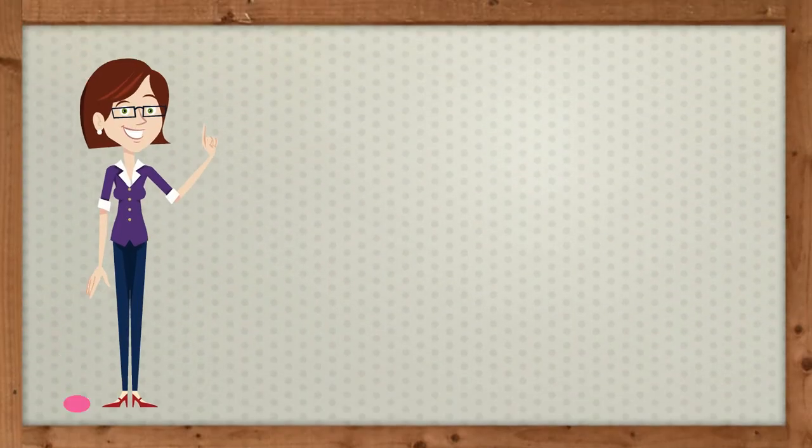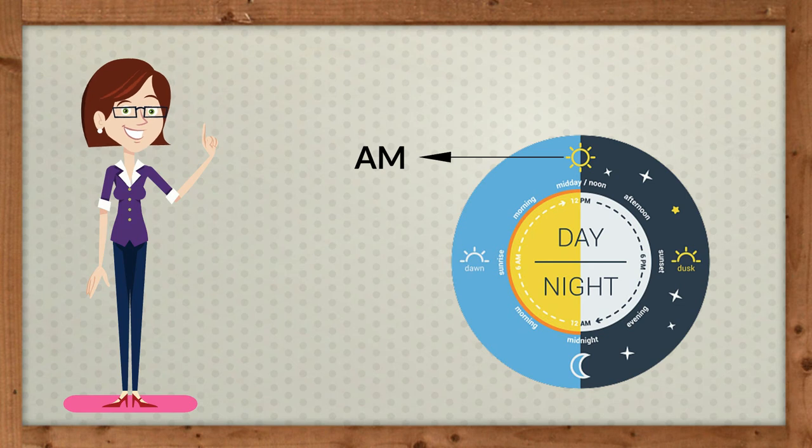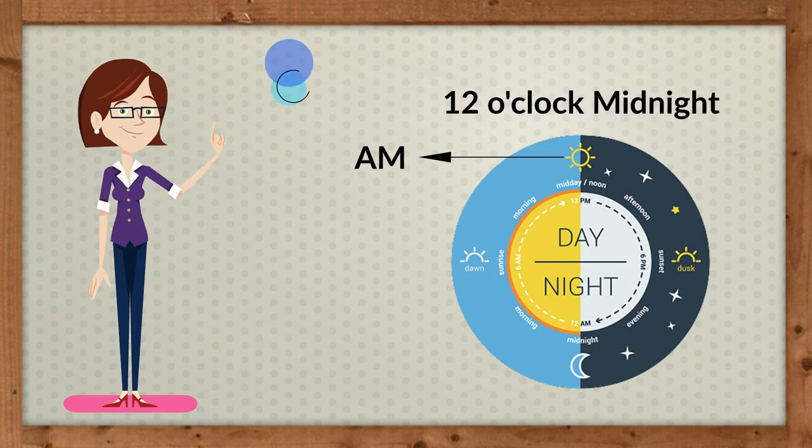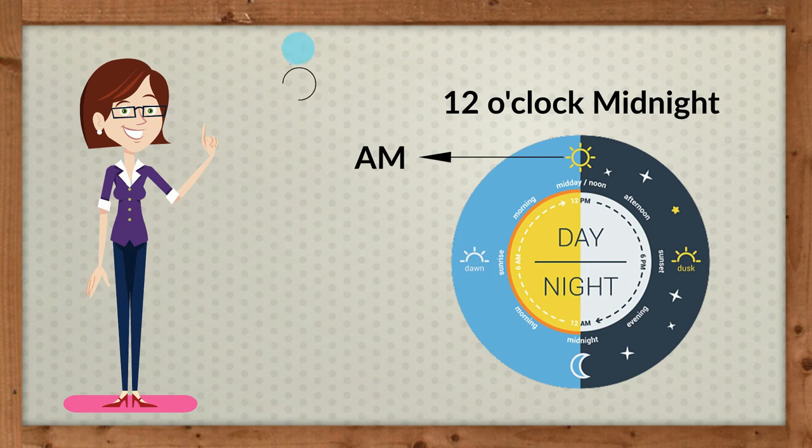We use AM to talk about time from exactly 12 o'clock at midnight till right before 12 o'clock in the afternoon.